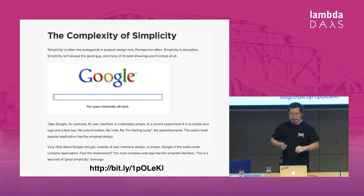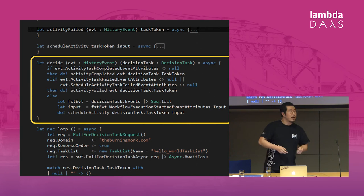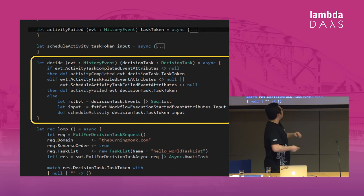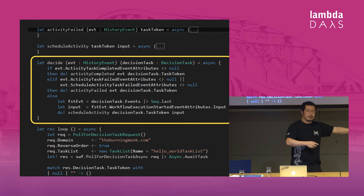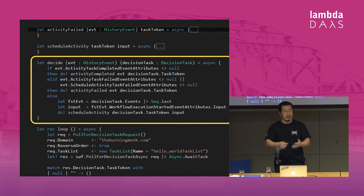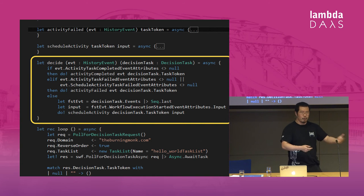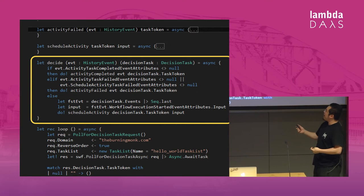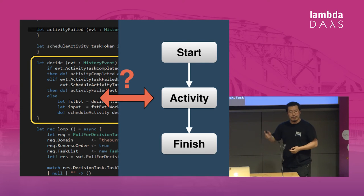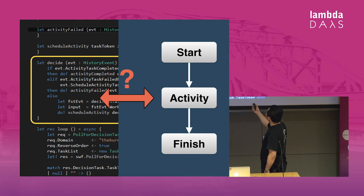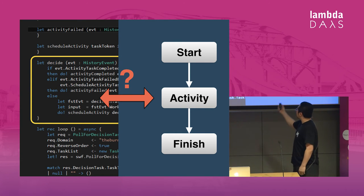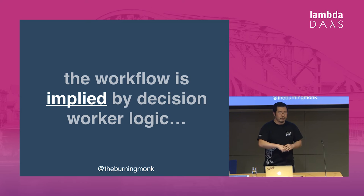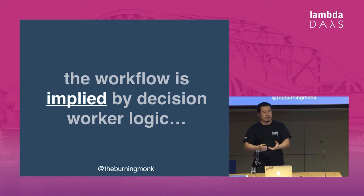Back to the example I showed earlier — even though I wrote a lot of code, this is probably the most important part: the decision worker logic that determines, based on the last event in the workflow, if the activity was completed then complete the workflow; if it failed then fail the workflow, etc. But looking at this code, I have no way of mapping it back to the workflow I actually had in mind. There's no easy way to translate this code into the mental image I had when I first started. That's because the workflow itself is implied by the logic in the decision worker.